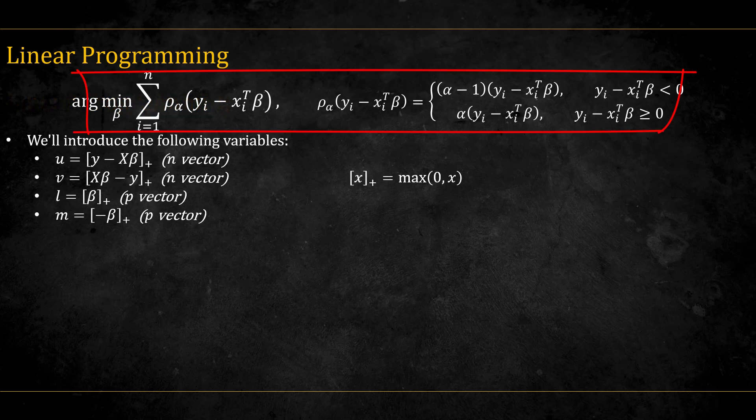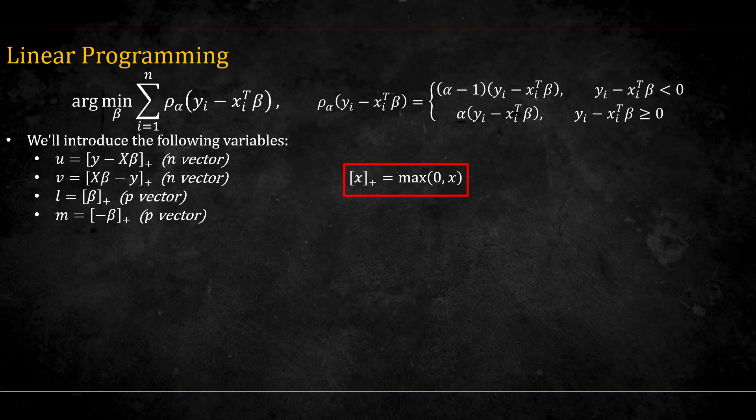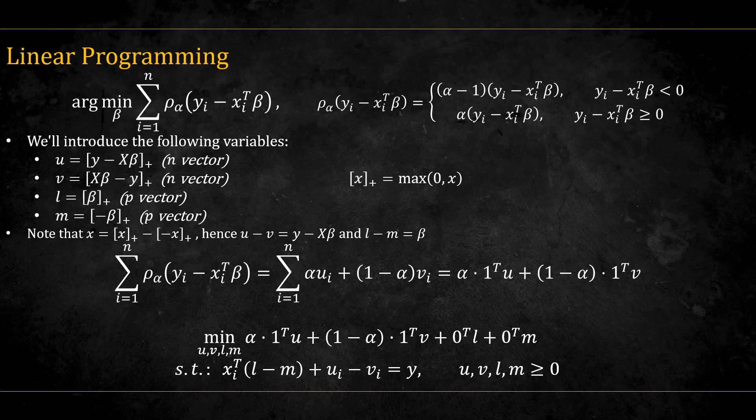This is our problem. We will introduce the following variables u, v, l, and m, each representing the positive part of the relevant vector. This notation signifies zeroing out any negative value in the vector. Notice that we can get back the original vector by subtracting the following, hence u minus v is equal to y minus x beta, and l minus m is equal to beta. Now we can write the quantile loss as following.